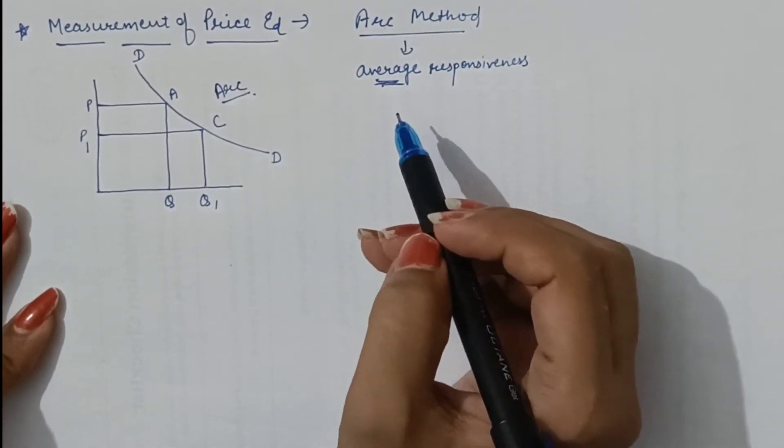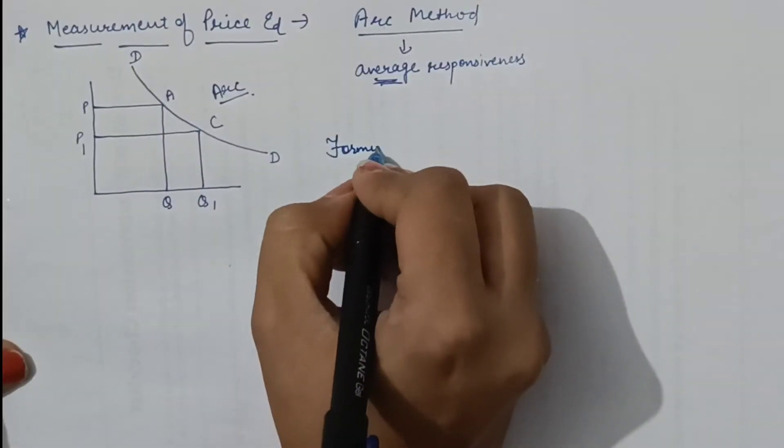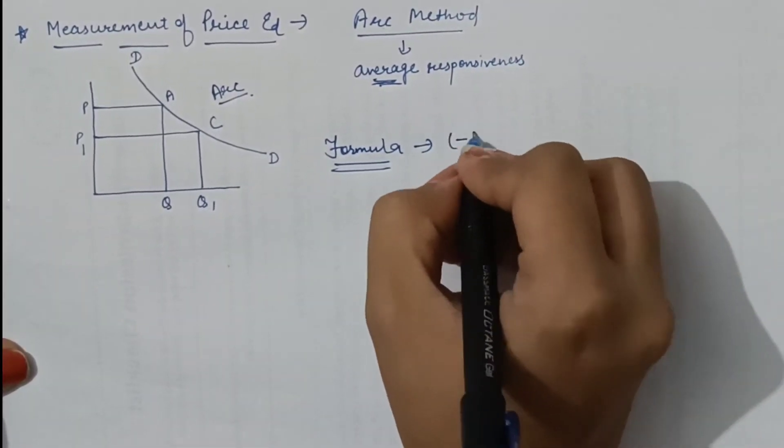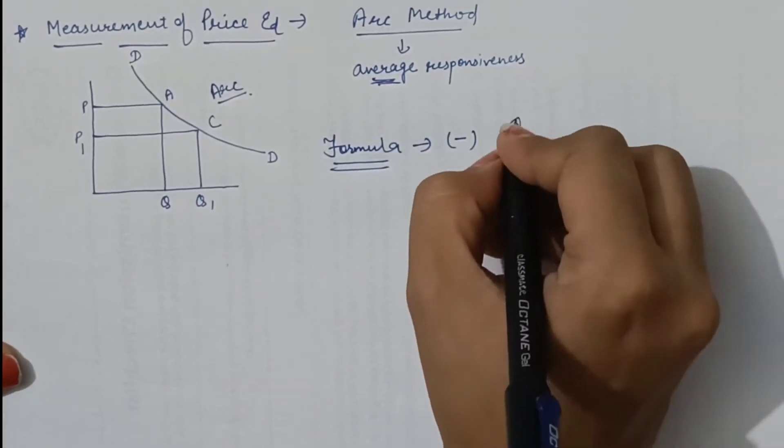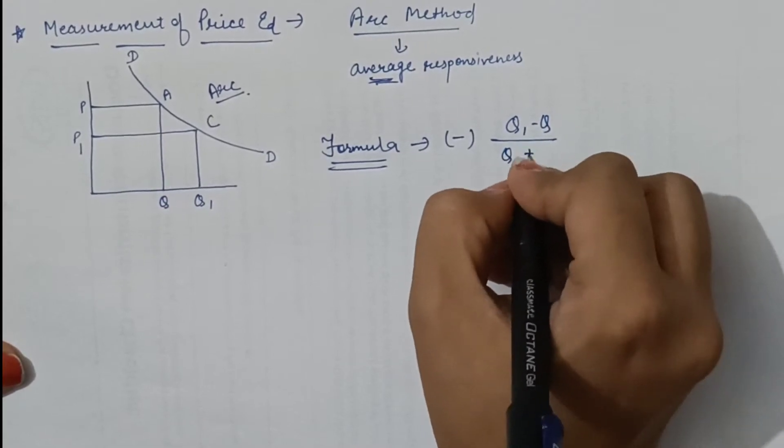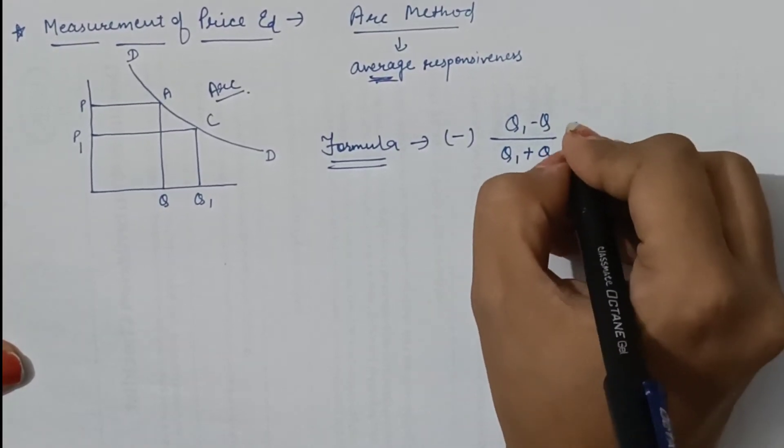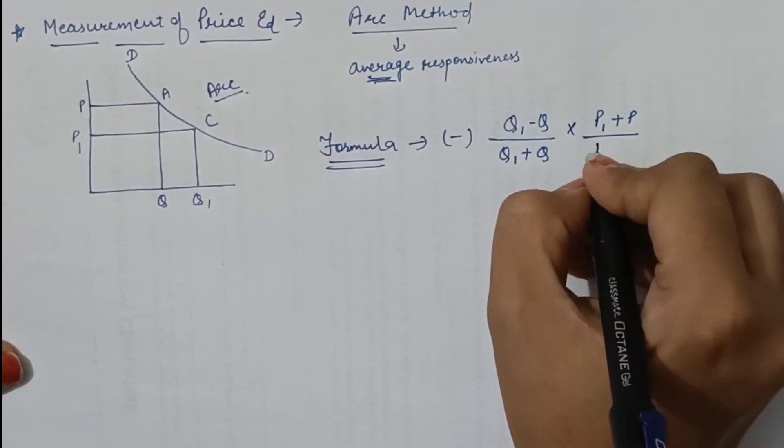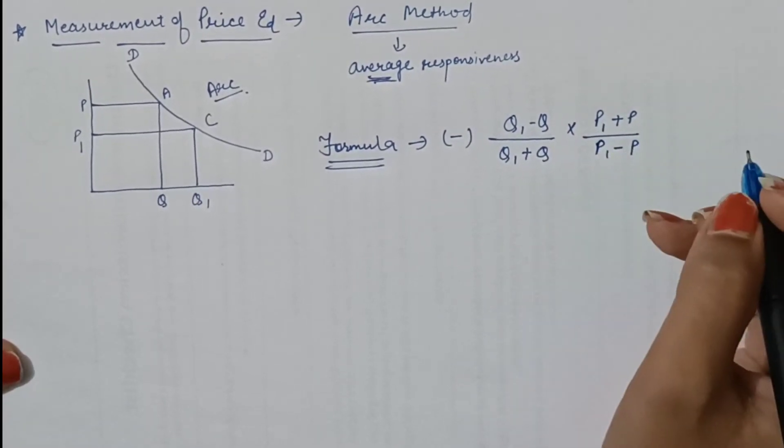We come to the formula for measuring price elasticity. It would be (Q1 - Q) divided by (Q1 + Q) multiplied by (P1 + P) divided by (P1 - P).